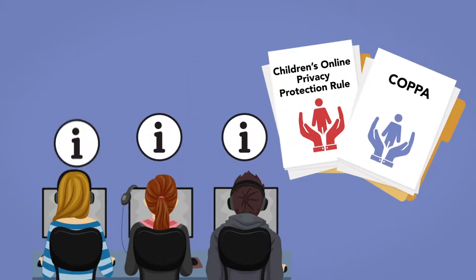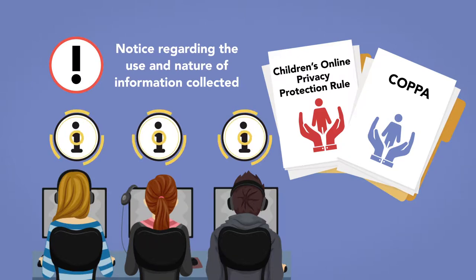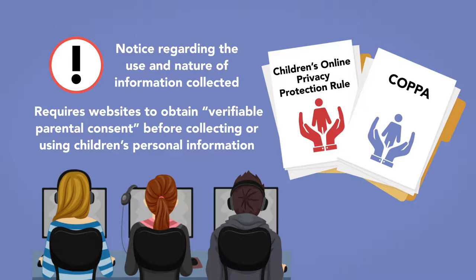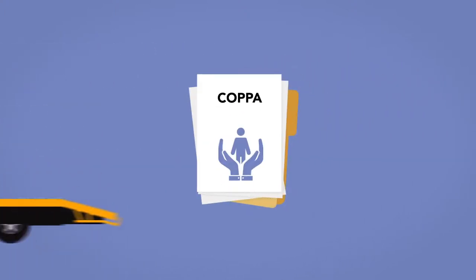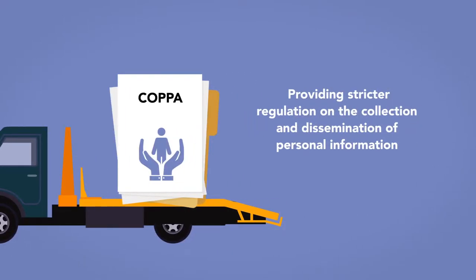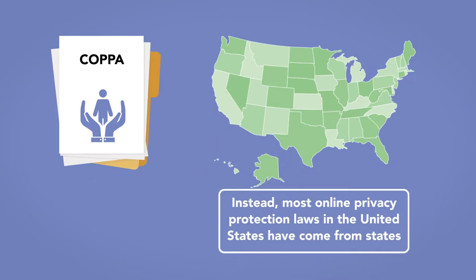COPPA and its supplemental regulations require websites to give notice regarding the use and nature of information collected, and to obtain verifiable parental consent before collecting or using children's personal information. While COPPA was revolutionary when enacted, many have been calling for an overhaul providing stricter regulation on the collection and dissemination of personal information. However, Congress has been slow to react, and most online privacy protection laws in the United States have come from states.